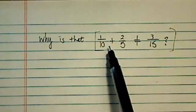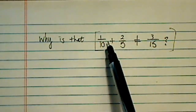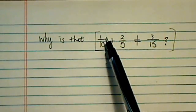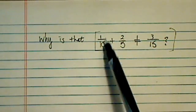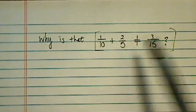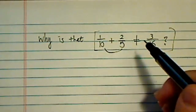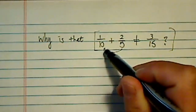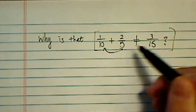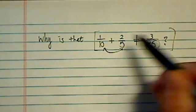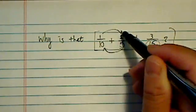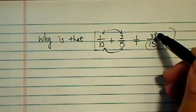I get this kind of question a lot, actually. Why is it that when you have one tenth plus two fifths, we can't simply add the denominators and make it fifteen, and add the tops and make it a three?